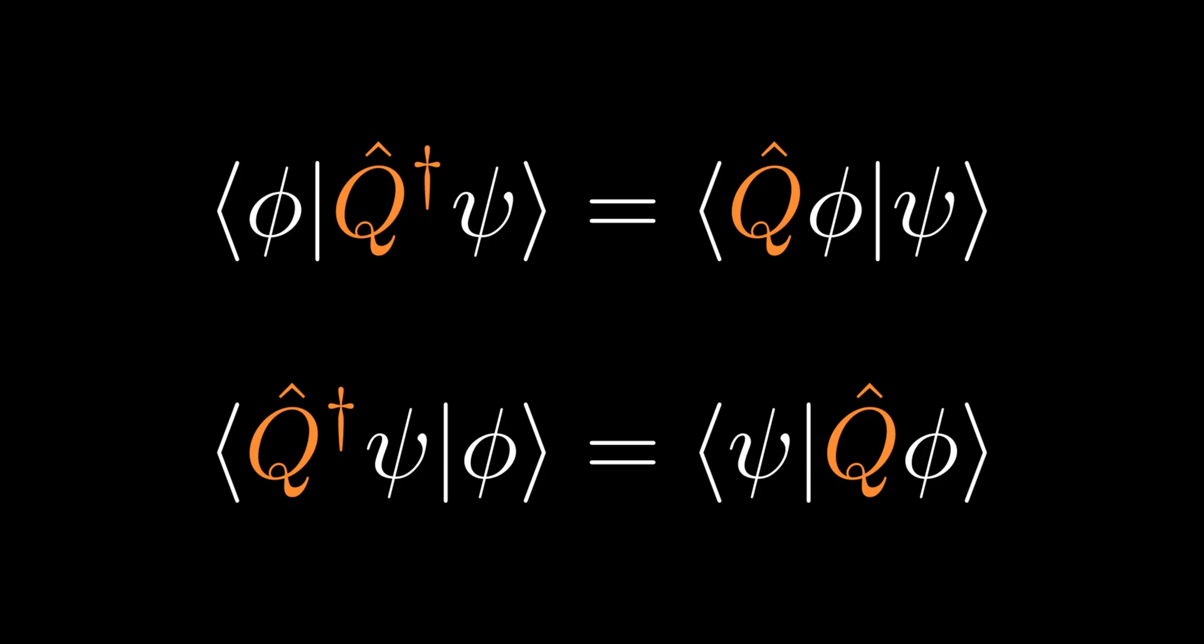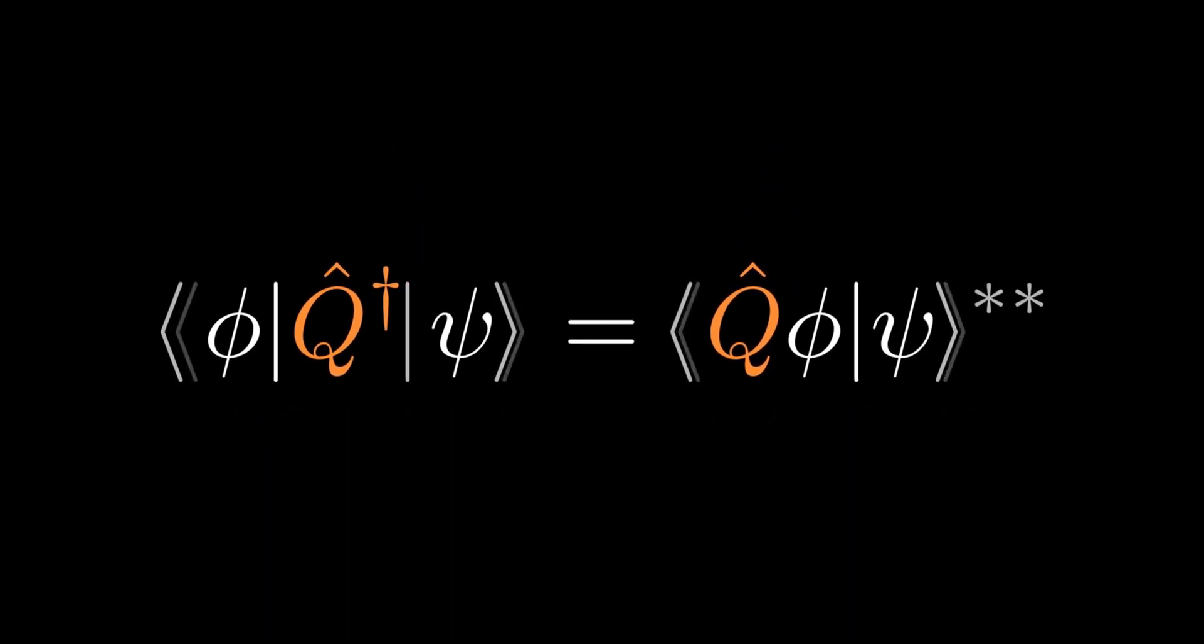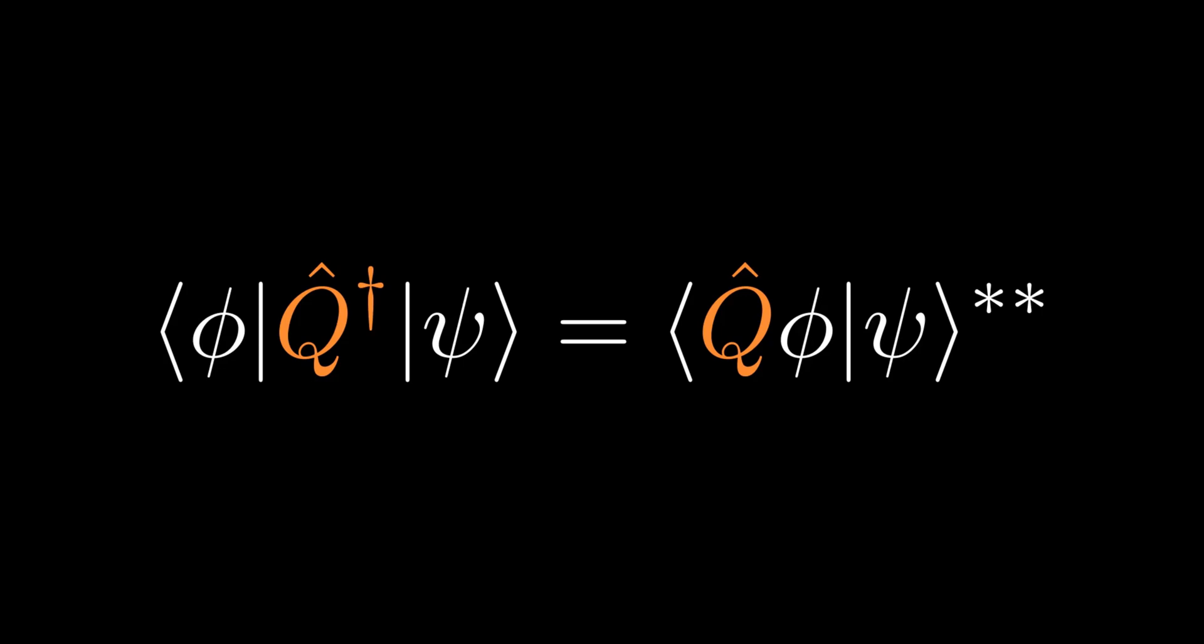The two equations above give us a simple rule for manipulating Hermitian adjoints. For an operator to enter the left argument of the inner product from the right, it must lose or gain a dagger. Same rule also applies for leaving the left argument going to the right. Taking the double complex conjugate of the right hand side of the definition yields a useful equation.